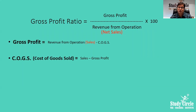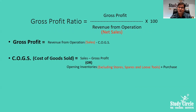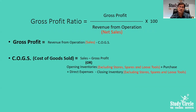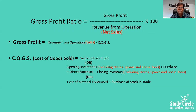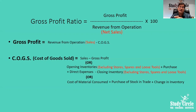The formula for cost of goods sold is: COGS = opening inventory (excluding stores, spare parts, and loose tools) plus purchases plus direct expenses minus closing inventory (excluding stores and spare parts). Once we get gross profit and COGS, we divide by revenue from operations and multiply by 100 to get the answer. An alternate formula is: cost of material consumed plus purchases of stock in trade plus change in inventory.